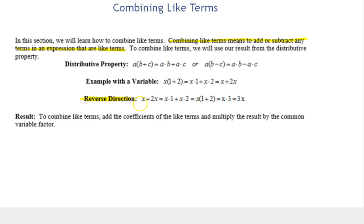So if we have an expression such as x plus 2x, we can write equivalent expressions. Notice these equal signs are saying that each expression is equivalent, and this is the result of the distributive property. x has a coefficient of 1, so we can think of it as x times 1. 2x is 2 times x, or x times 2 by the commutative property. We can then write this as x times the sum of 1 plus 2, a direct result of the distributive property in reverse.